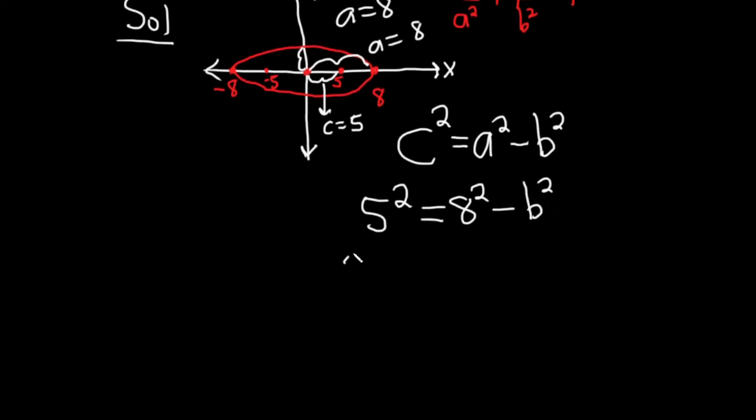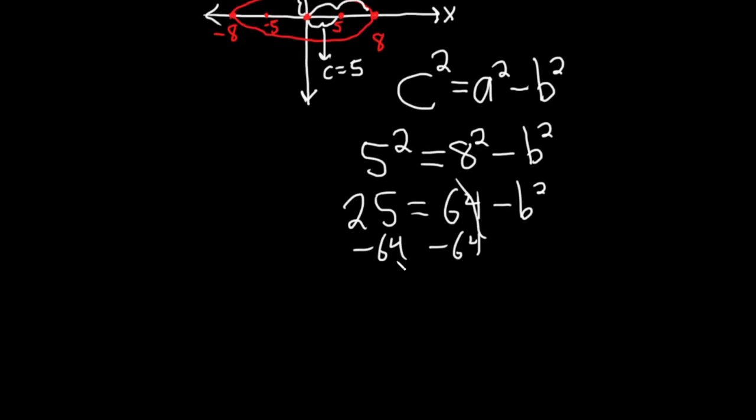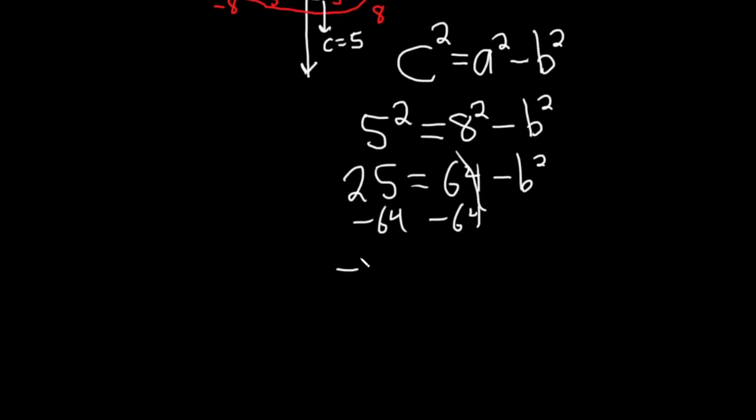So 5² is 25, and 8² is 64 minus b². So now we can subtract 64, and that's going to give us -39 = -b². Then you can just multiply by -1, and we have b² = 39.